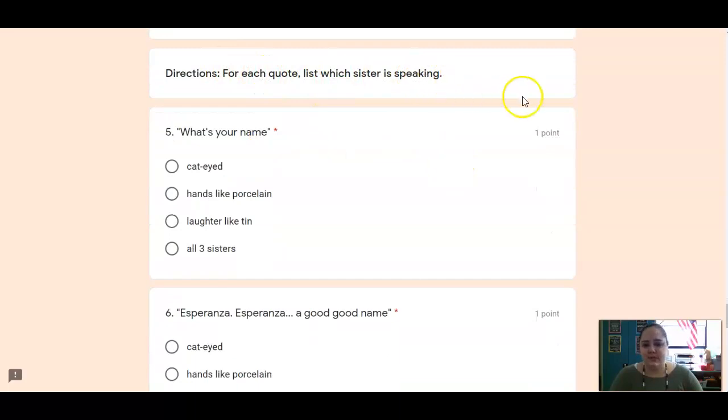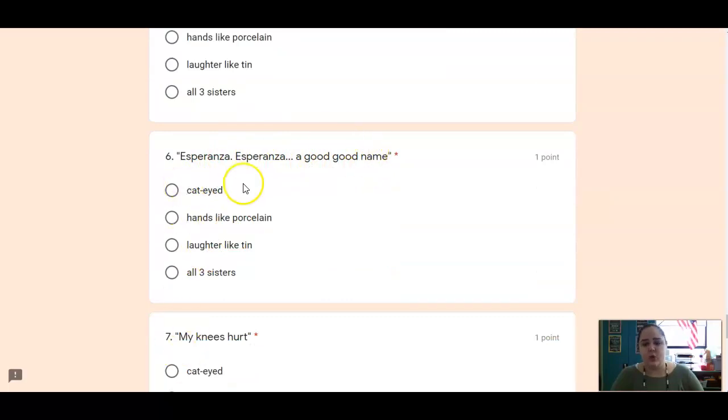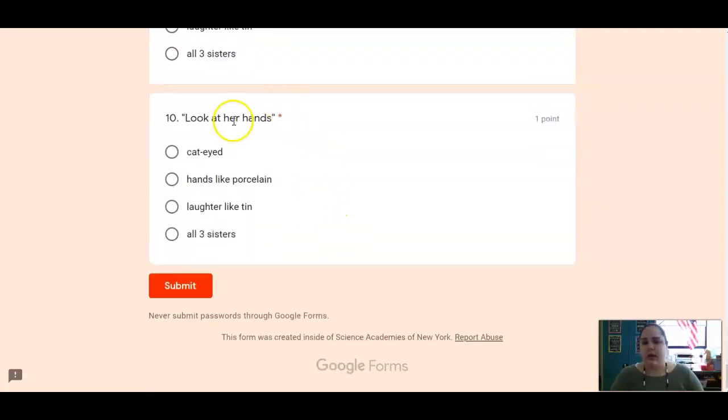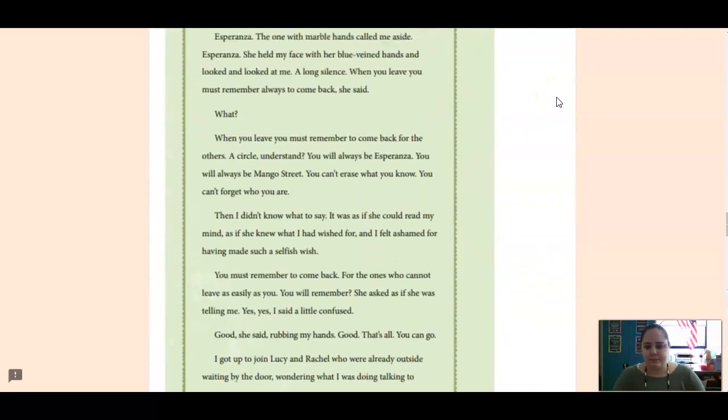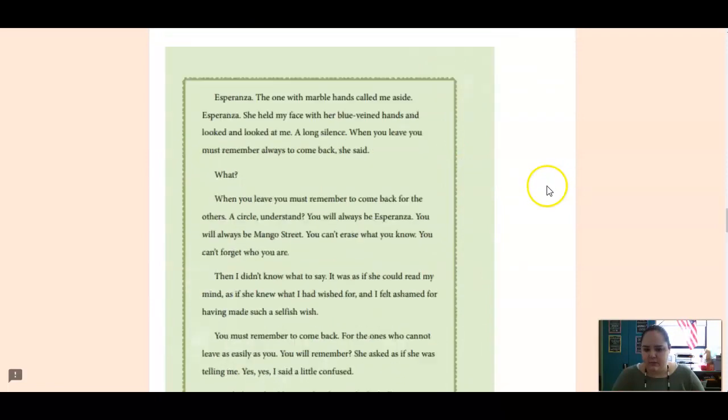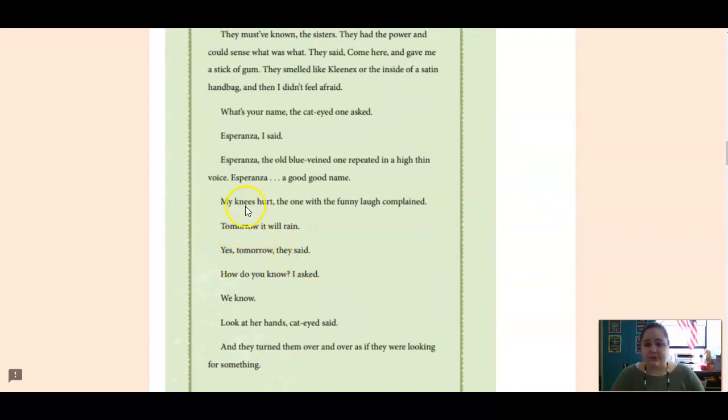It says, for each quote, list which sister is speaking. So, you're going to have to go back into the text and figure out who's speaking, because they don't tell you. So, when they say, what's your name? Look for the clues. Which sister is speaking, or is it all three? When they say, Esperanza, a good name. Who is speaking? My knees hurt. Tomorrow it will rain. Yes, tomorrow we know. And look at our hands. So, you're going to go back into the text, and you're going to find each quote. So, for example, let me find one for you. Right here, we know. Right here, tomorrow it will rain. My knees hurt. So, they're all in there. You just have to go back and find which sister is being described. So, look for those words. The cat-eyed one, the one with hands like porcelain, and the one with laughter like tin.